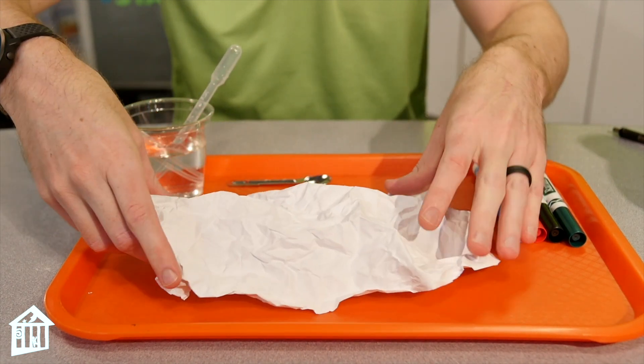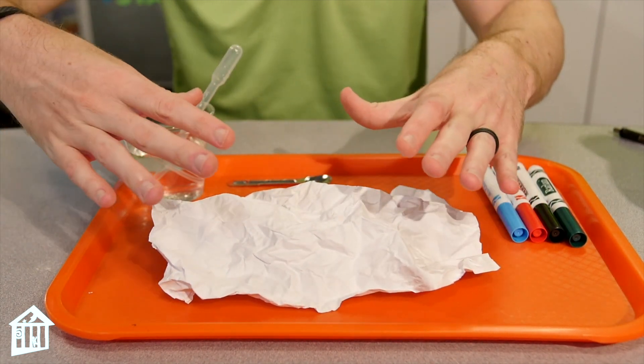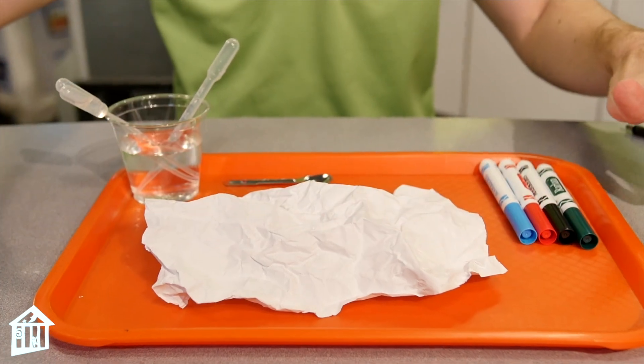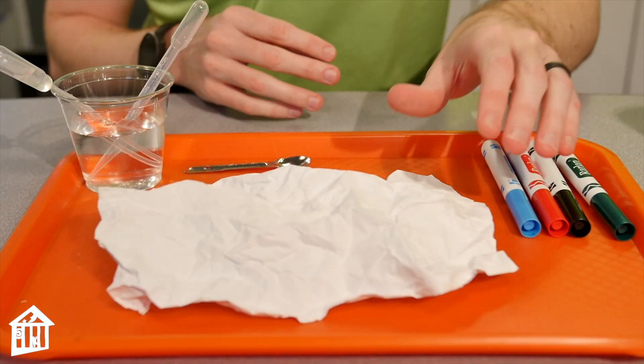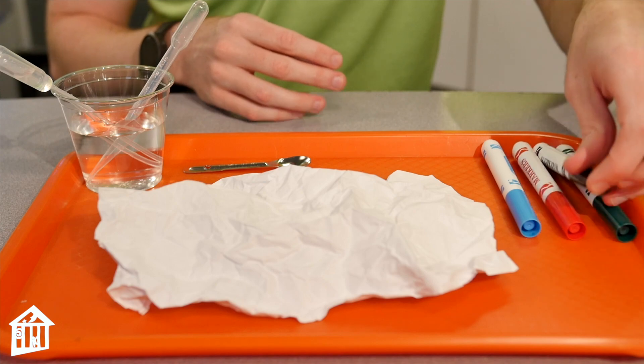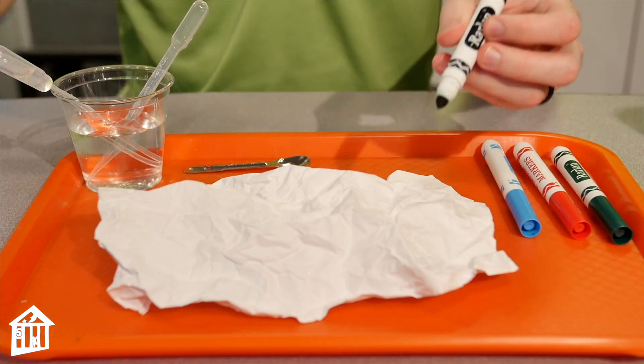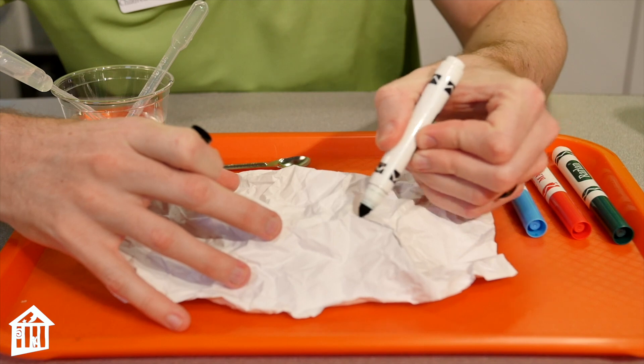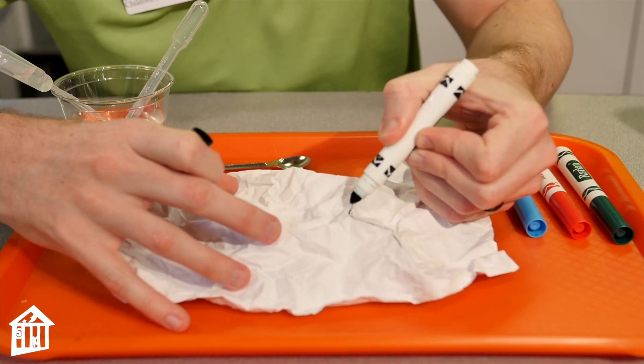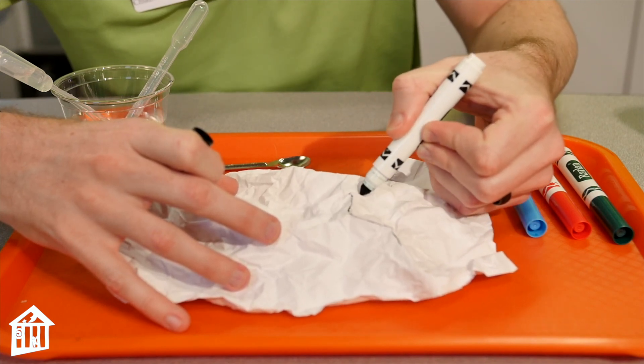And now from a bird's eye view this looks like a mountain range. Once you have your mountain range, take different colored markers and you'll start coloring along the highest parts of your paper or along the tops of the mountains.